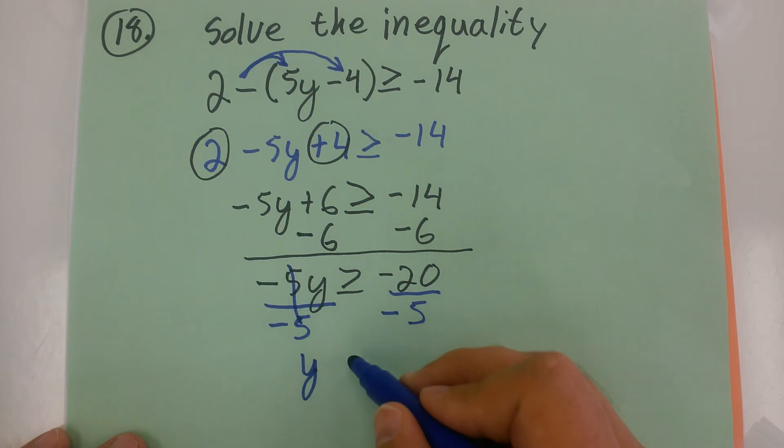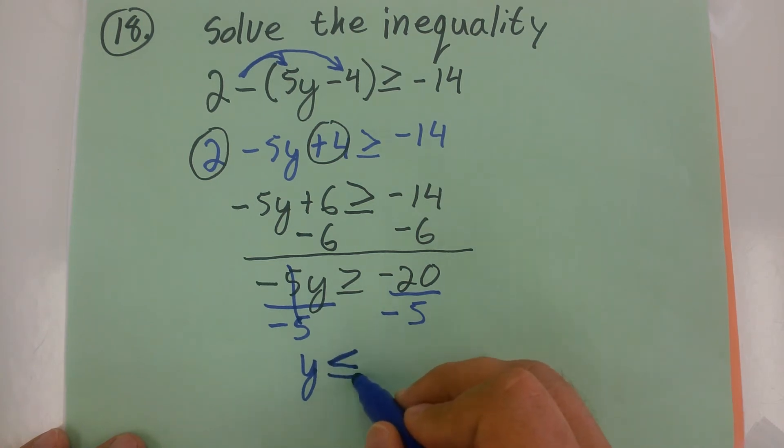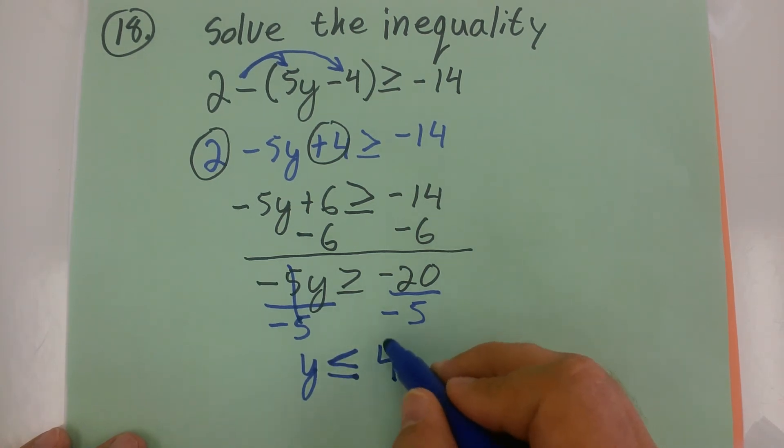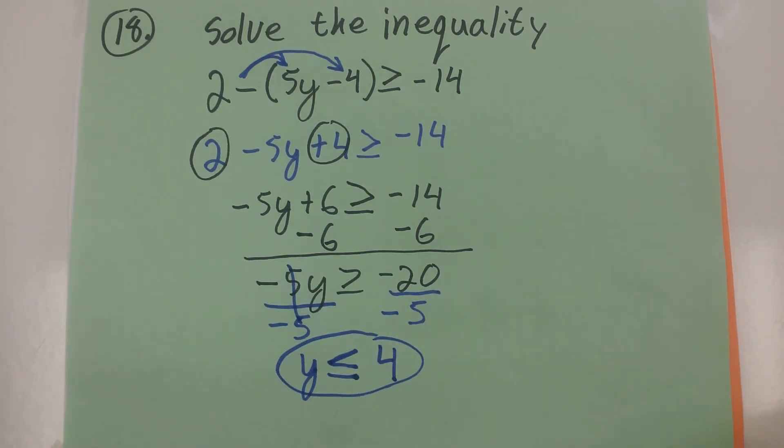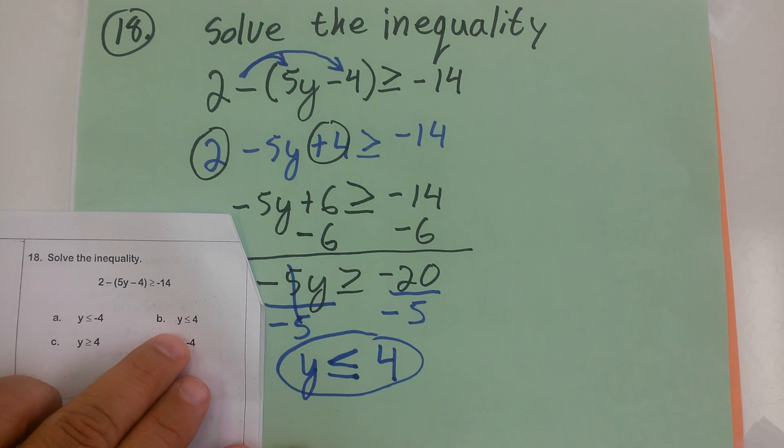So this is going to give me Y is less than or equal to 4. And that should be your solution for this inequality. Let's see if the answer lines up with any of the choices for the PERP practice. And there it is. It's choice B.